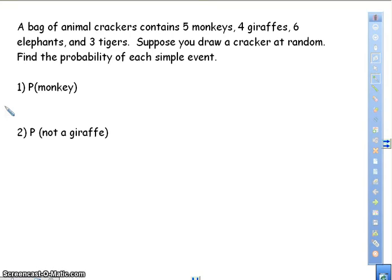A bag of animal crackers contains five monkeys, four giraffes, six elephants, and three tigers. Suppose you draw a cracker at random, find the probability of each simple event. Now we need to know how many total animals we have here. So you have five plus four, which is nine. Nine plus six is fifteen, plus three is eighteen. So we have eighteen total.